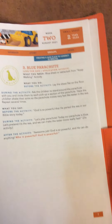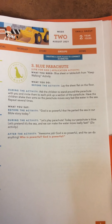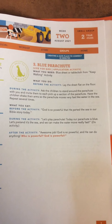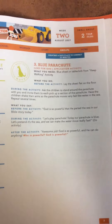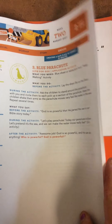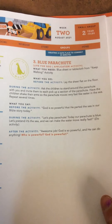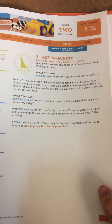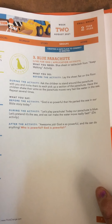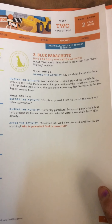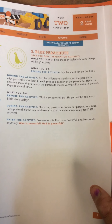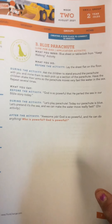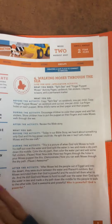Another activity uses one of the blue tablecloths laid flat on the floor. Ask kids to stand around it and each pick up a section, making it like a parachute. Have the kids shake their arms so the parachute moves really fast like water in the sea. Say: God is so powerful that he parted the sea in our Bible story today, so we're going to play parachute — our parachute is blue, let's pretend it's the sea. Can we make the water move really fast? Awesome job — God is so powerful, he can do anything. Who is powerful? God is powerful. This might be a good activity to save for the end if you've got extra time.